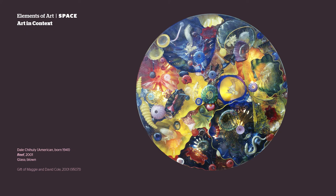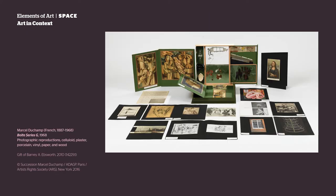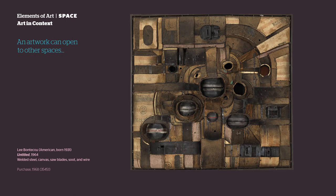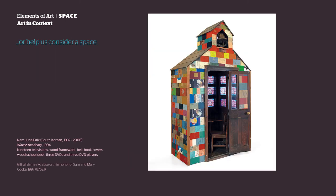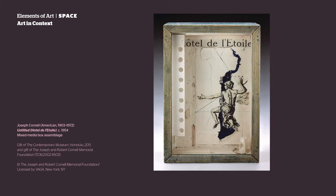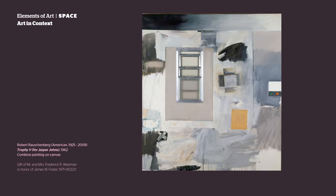What about a shell? Marcel Duchamp plays with space in his La Boite en Valise, also known as Box in a Suitcase, which contains miniature reproductions of the artist's own work. And artwork can open to other spaces, or help us consider a space. If you created this artwork, would you hide something special in the open space of the little box that is stapled to it? Is the window a way out of the painting? Or is it a way in?